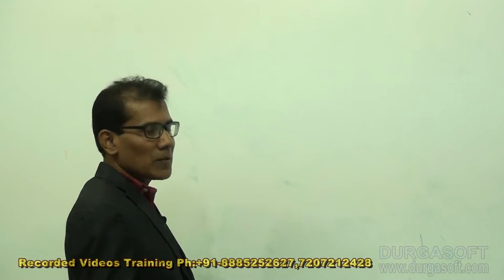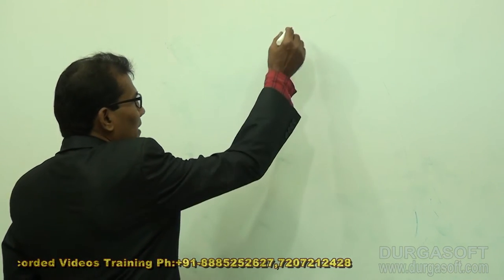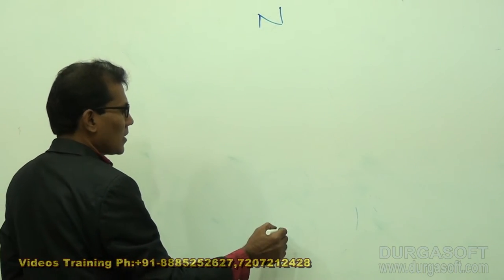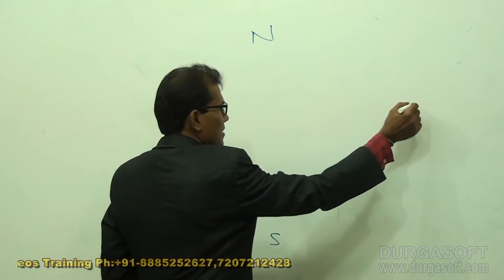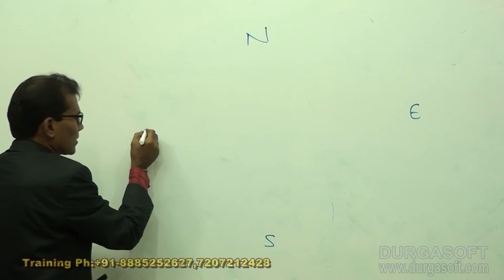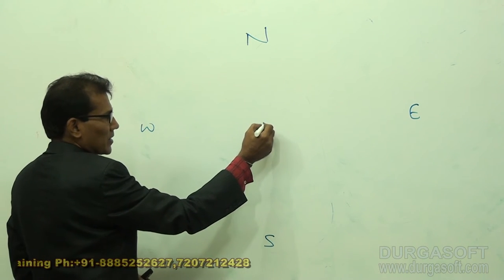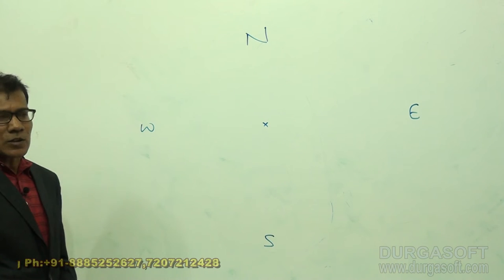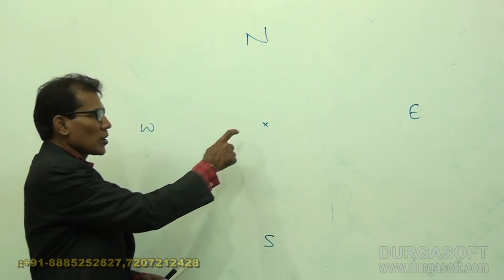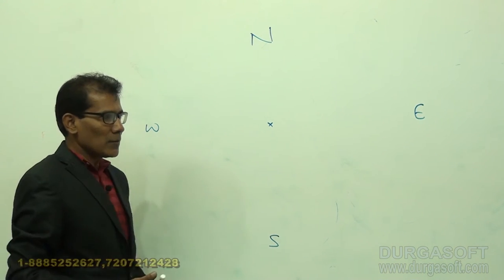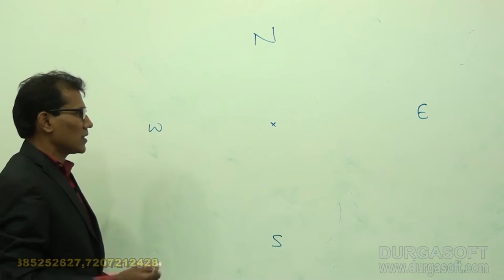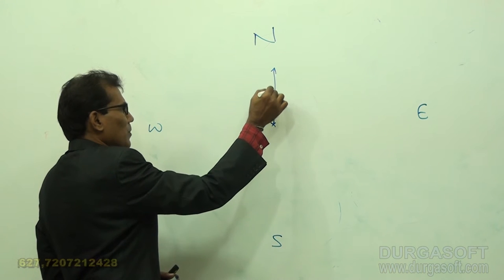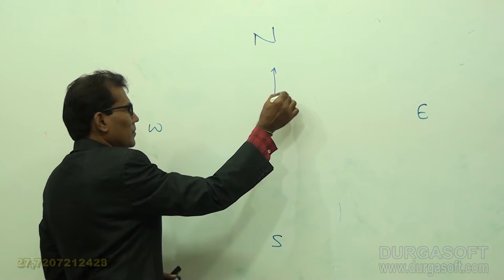Every question of this third type should be done on paper. First, indicate the directions: north, south, east, west. Every question starts with the center point. So this is the starting point of Neeta. Neeta moved 50 meters towards north — say this is the 50 meters towards north.